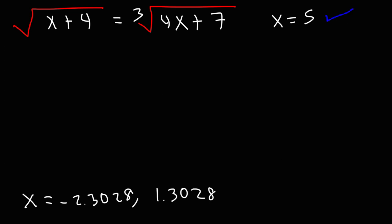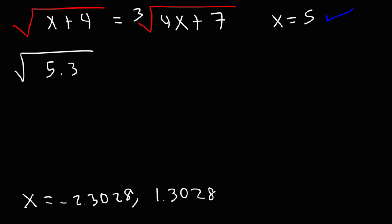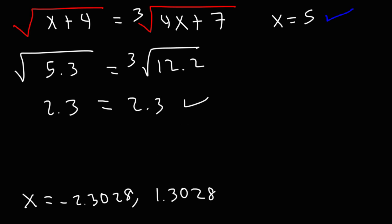Let's try x approximately 1.3028 — we'll use 1.3 to keep it simple. On the left: 1.3 plus 4 is 5.3, so the square root of 5.3 is approximately 2.3. On the right: 4 times 1.3 is 5.2 plus 7, which is about 12.2, and 12.2 raised to the 1/3 power is also about 2.3. So this answer is correct.